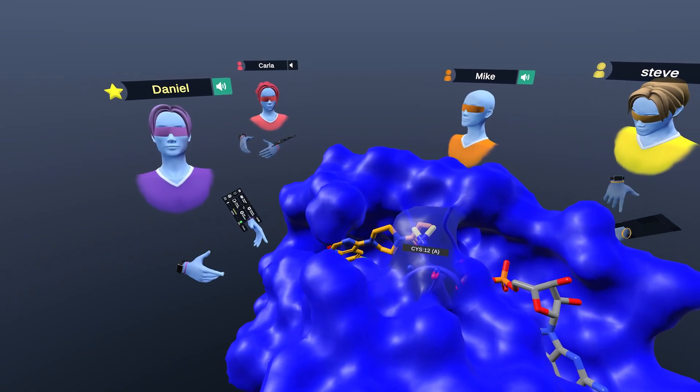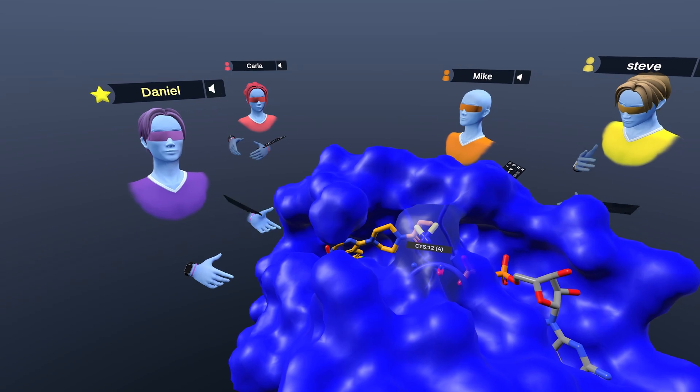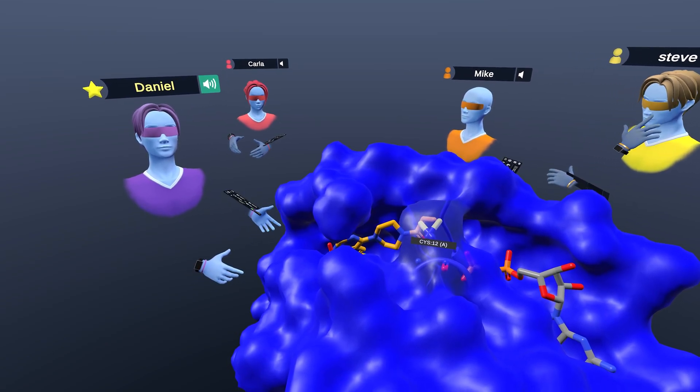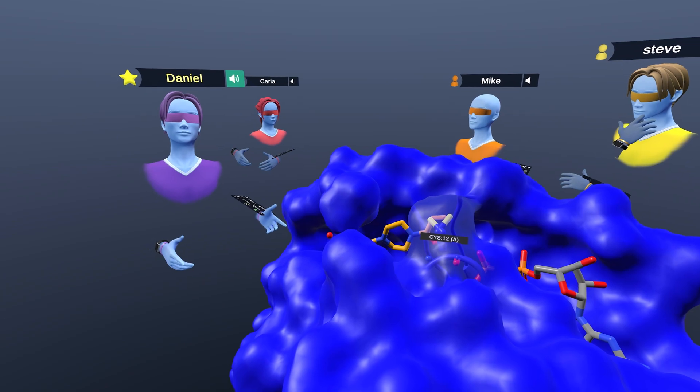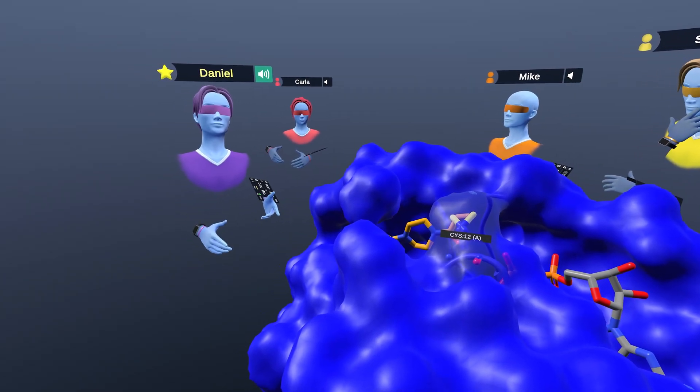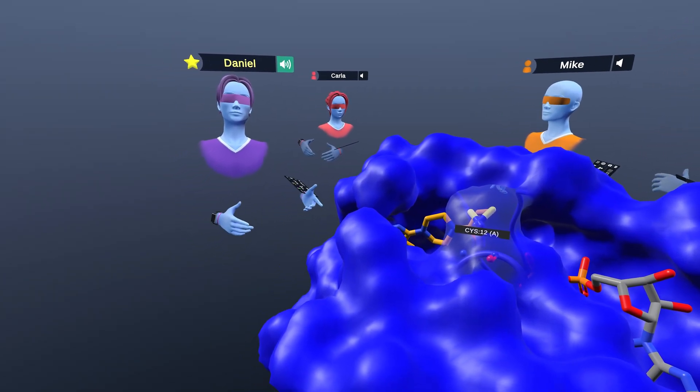KRAS protein is a GTPase, which means it converts GTP into GDP. In this way, the KRAS acts like a switch that is turned on and off by the GTP and GDP molecules.